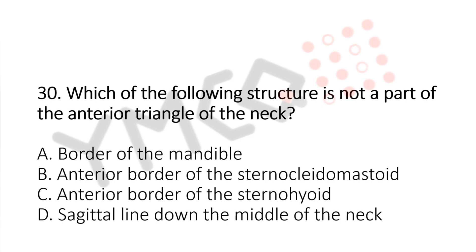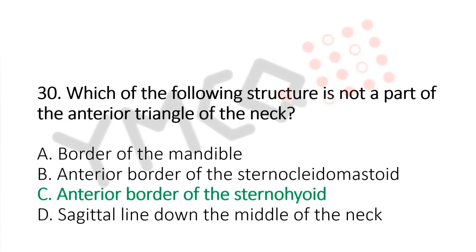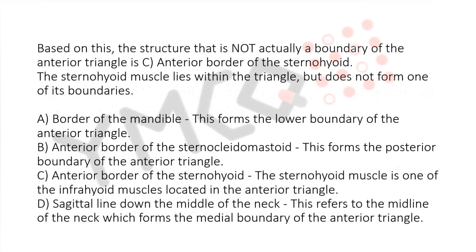And the answer is C. Anterior border of the sternohyoid. The structure that is not actually a boundary of the anterior triangle is C. Anterior border of the sternohyoid.